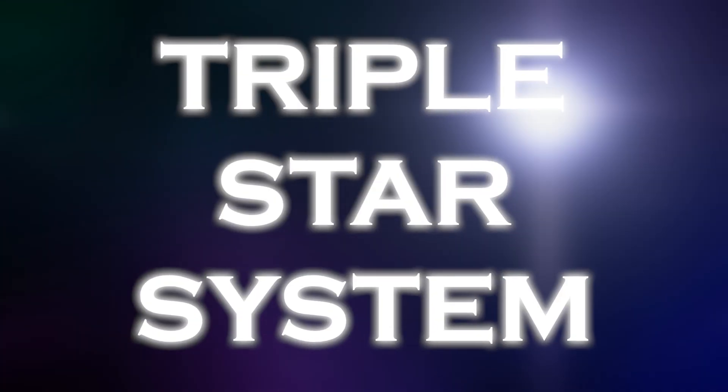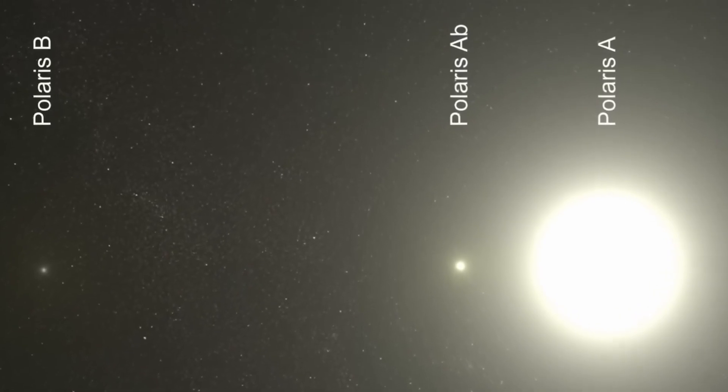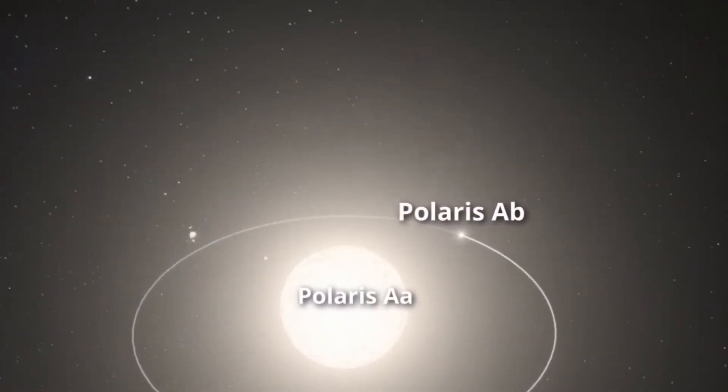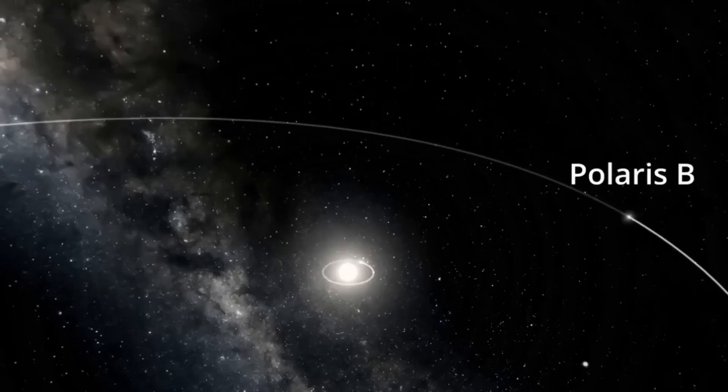Despite its appearance as a lone star, it is actually part of a rather complex triple star system. Within this system, the primary stars are Polaris AA and Polaris AB, which when seen with the naked eye, look like a single star.